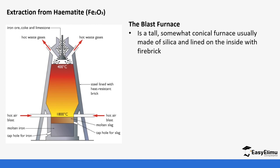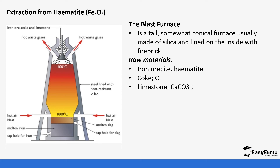The blast furnace is a conical furnace usually made of silica. The raw materials used are the ore itself, coke, limestone, and hot air. Coke is the main substance used — it produces the main reducing agent, carbon monoxide, through oxidation of carbon to form carbon dioxide, which is further reduced to carbon monoxide. The conditions for this reaction are temperatures between 1400 to 1600 degrees Celsius.